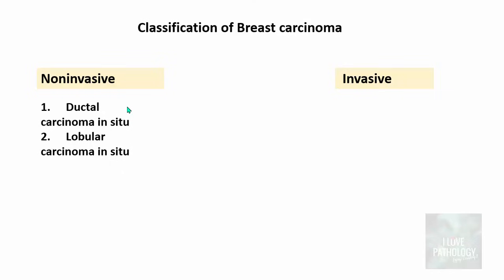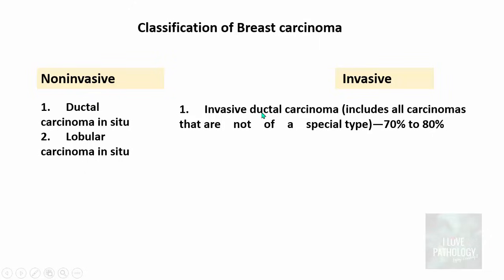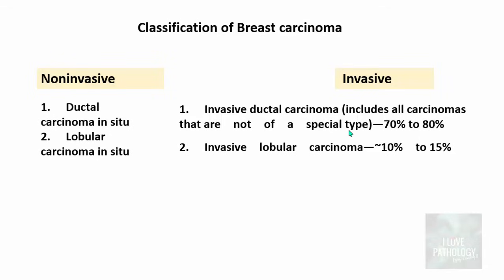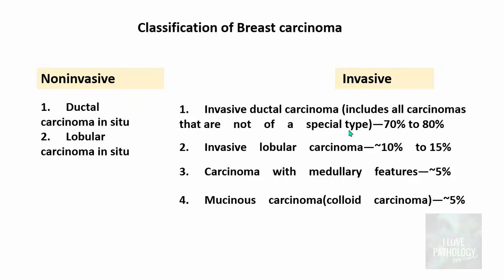Non-invasive breast cancers are referred to as carcinoma in situ, further categorized as ductal carcinoma in situ (DCIS) and lobular carcinoma in situ (LCIS). The most common invasive breast cancer is invasive ductal carcinoma — not of a special type (NOS) — accounting for 70 to 80 percent of cases. Special types include invasive lobular carcinoma (10–15%), carcinoma with medullary features (~5%), mucinous/colloid carcinoma (~5%), and tubular carcinoma (~5%).